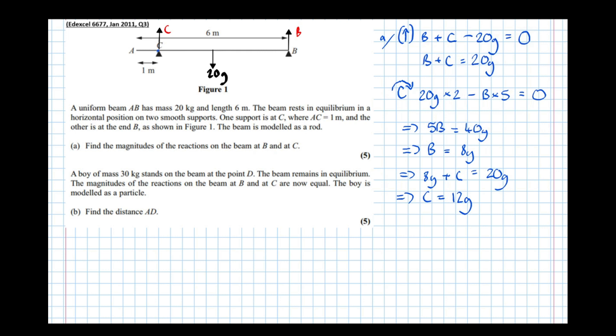And let's put boxes around the answers just to make them easier to mark. So C is 12G, B is 8G.